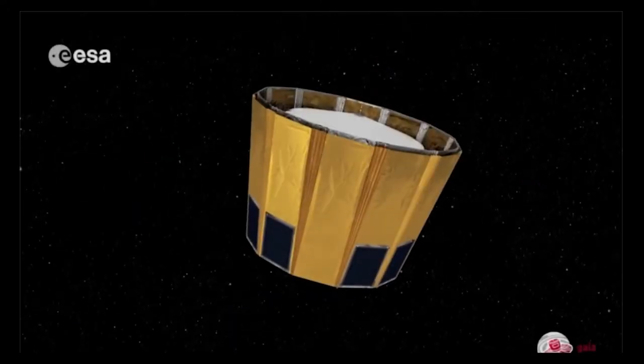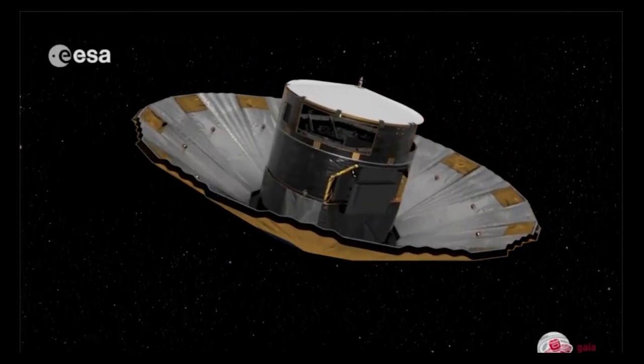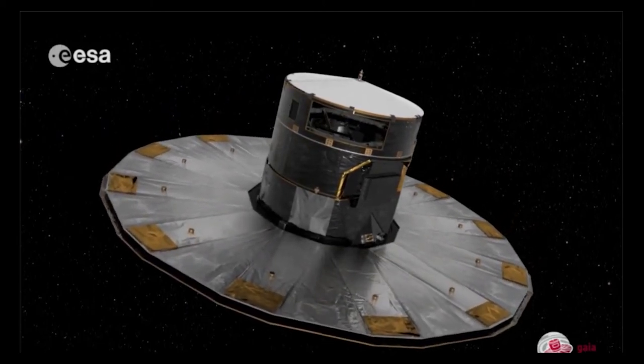Parallax is so useful that it's being used by the Gaia spacecraft, which is making a precise 3D map of a billion objects in space.